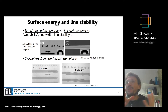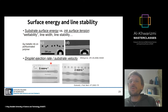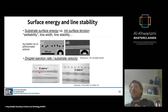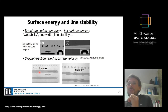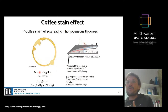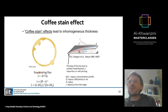Droplet ejection rate relative to substrate velocity also determines print quality. Too fast a substrate with slow ejection gives isolated droplets; too slow a substrate deposits excess fluid causing bulging instabilities. Optimizing both gives controlled, uniform lines. Furthermore, the ink contains solute and solvent, and the goal is to optimize solid-state material deposition — requiring careful management of flows that develop inside printed patterns.